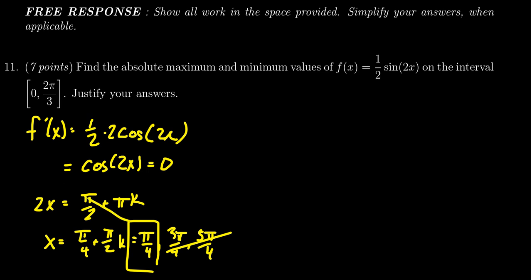Next, we're going to build a table for all our x coordinates. We'll list the boundaries of the interval: 0 and 2π/3. We also need to include any critical numbers, so we include π/4.